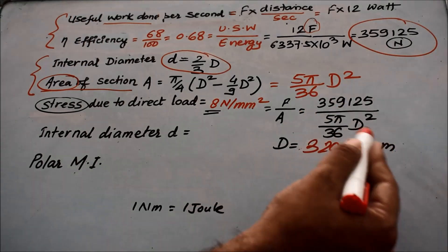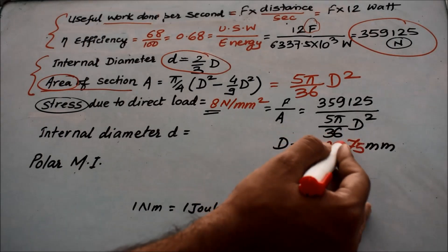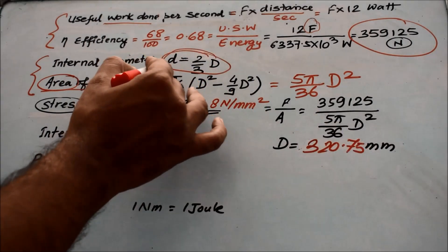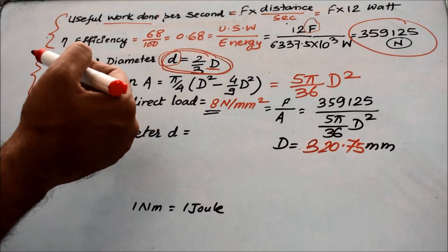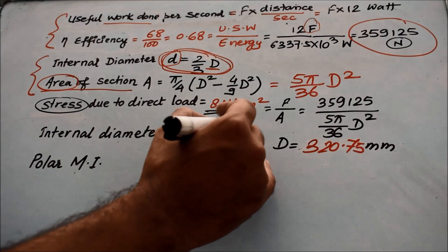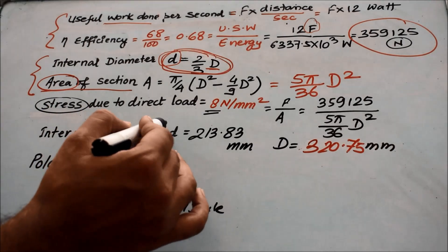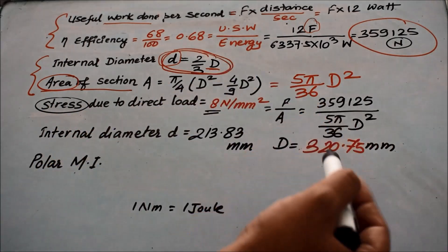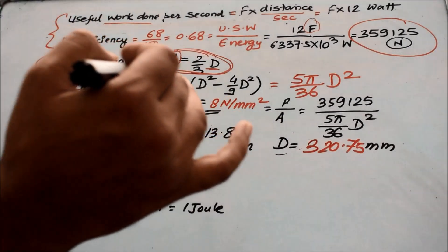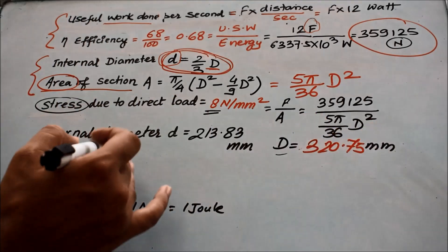As this is a hollow shaft, whatever you got is the external diameter. Once you got the external diameter value to be 320.75, you have to put it into this equation. You will get the value of small d as 213.83 mm. So ultimately you got the value of capital D and small d, that means hollow shaft internal and external diameters are both revealed.